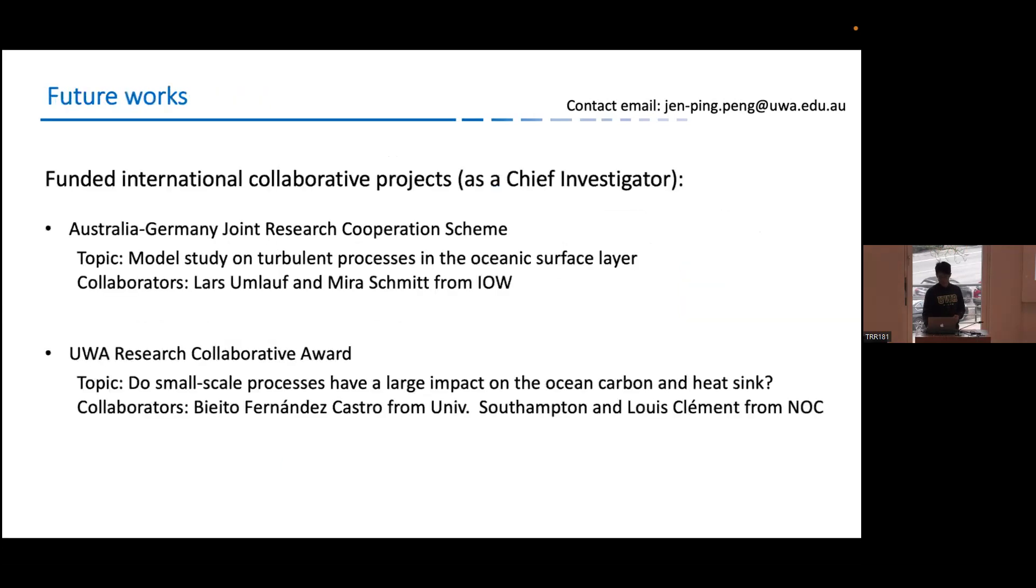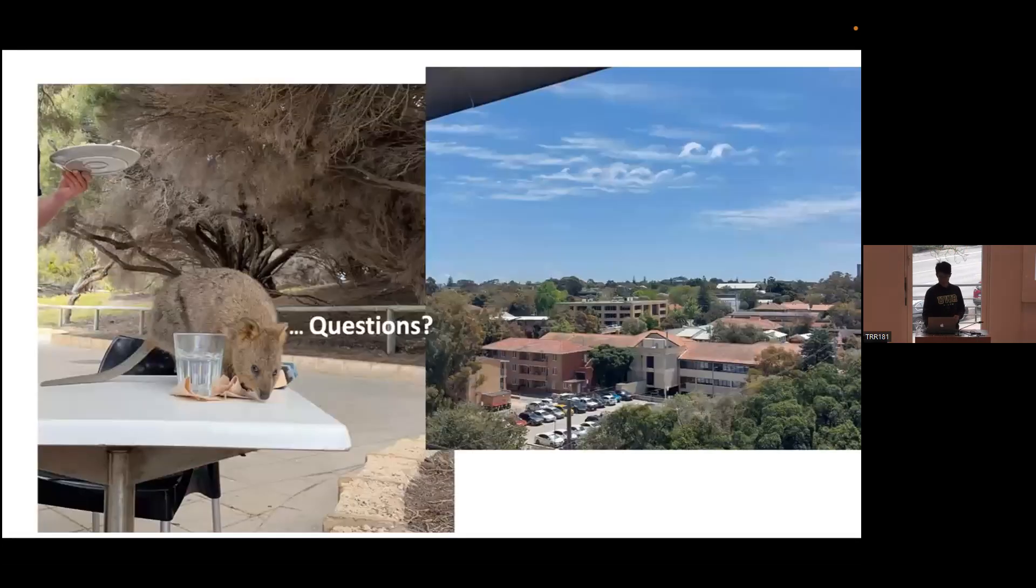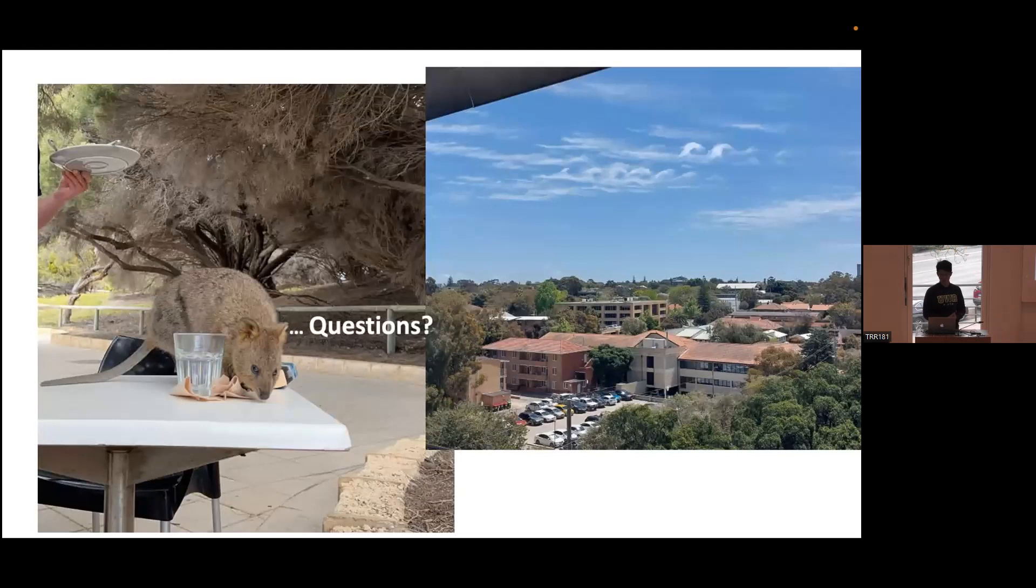Thank you very much. So people always ask me what I have in Australia. Now I can tell you we have shear instability, blue sky and a Quokka.